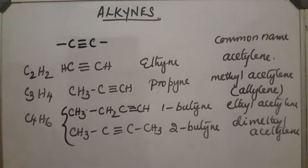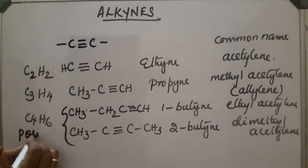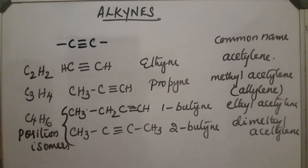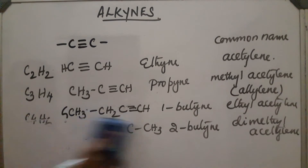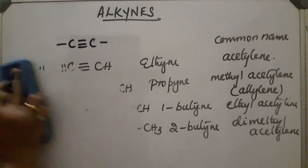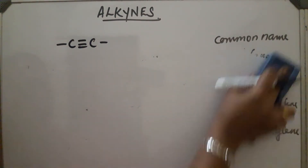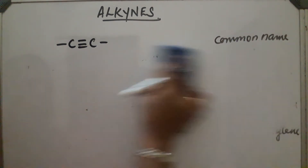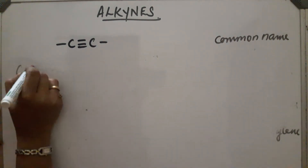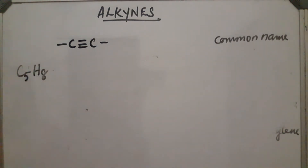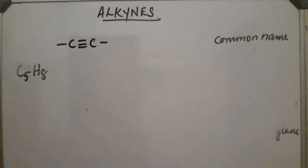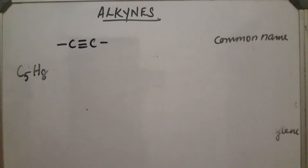In these two isomers, the triple bonds are at different positions, so these isomers are called position isomers. Alkyne shows positional isomerism. It also shows chain isomerism. Let us see this in the case of pentyne, the fifth member, which is C₅H₈. Five carbon atoms are there and it can be drawn in two ways: one straight chain and one branched chain.